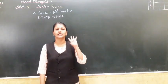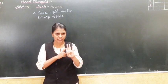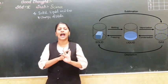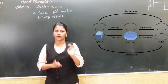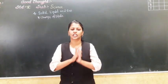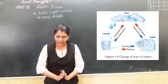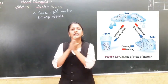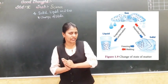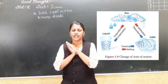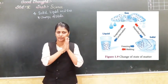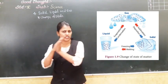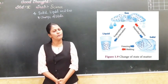So we have four processes: evaporation, condensation, melting, and freezing. We can change from one state to another by giving heat or by cooling. For evaporation and melting, we need heat; for condensation and freezing, we need cooling.